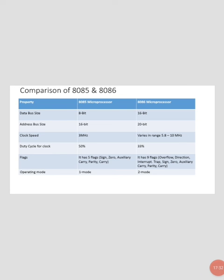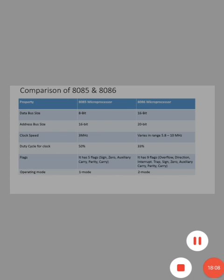In today's lecture we have seen the comparison of the 8085 and 8086, the architecture of the 8086, its features, the features of the 8086 and 8088, and the primary objectives of the 8086 family. In the next lecture we are going to see the features of the 80286, 80386, and further processors in the Intel x86 family.